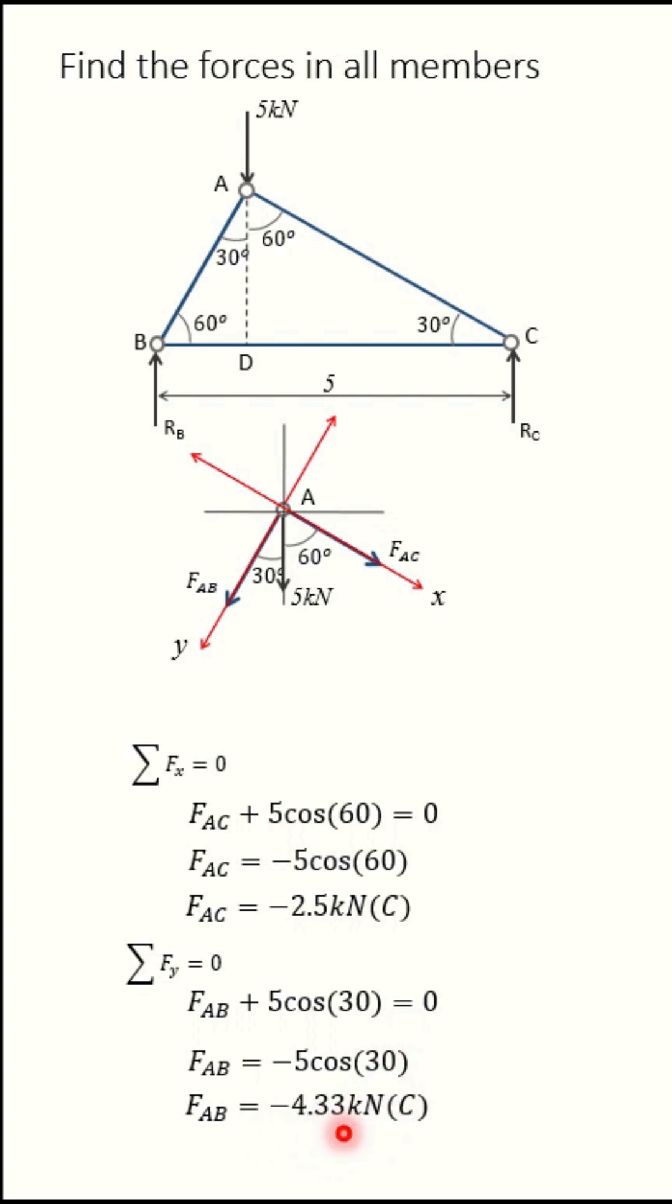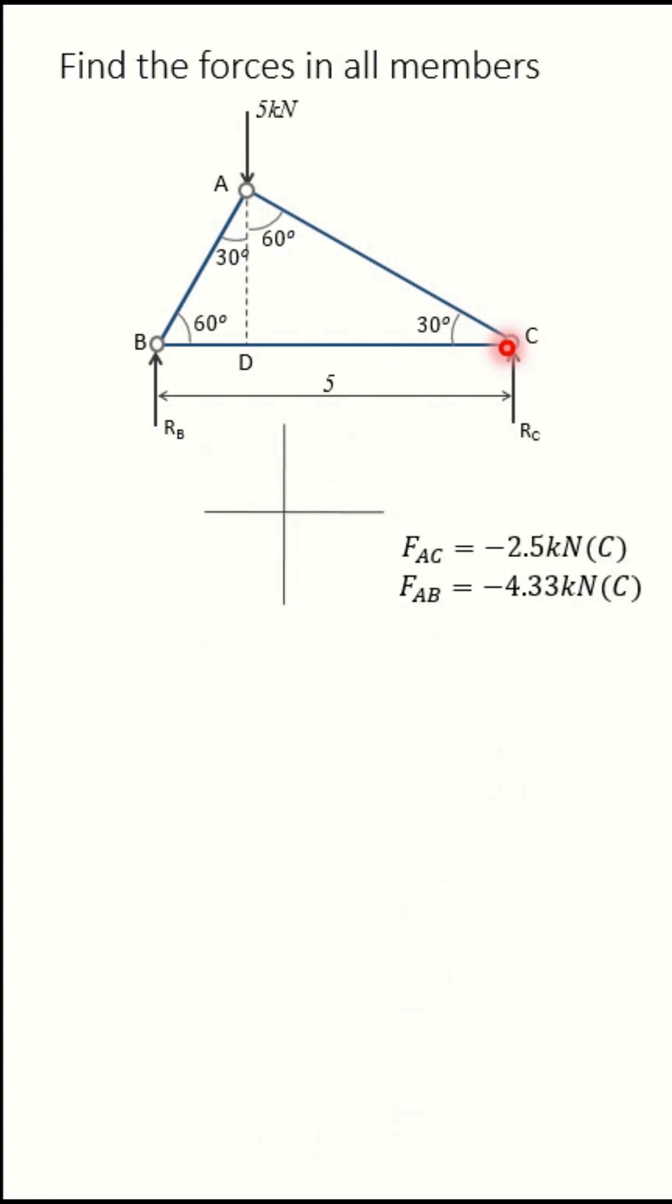Now next we will take joint C. There is one reaction RC upward direction. Draw this force RC and then forces along AC and BC. So this force is FAC 30 degrees and FBC along horizontal direction.